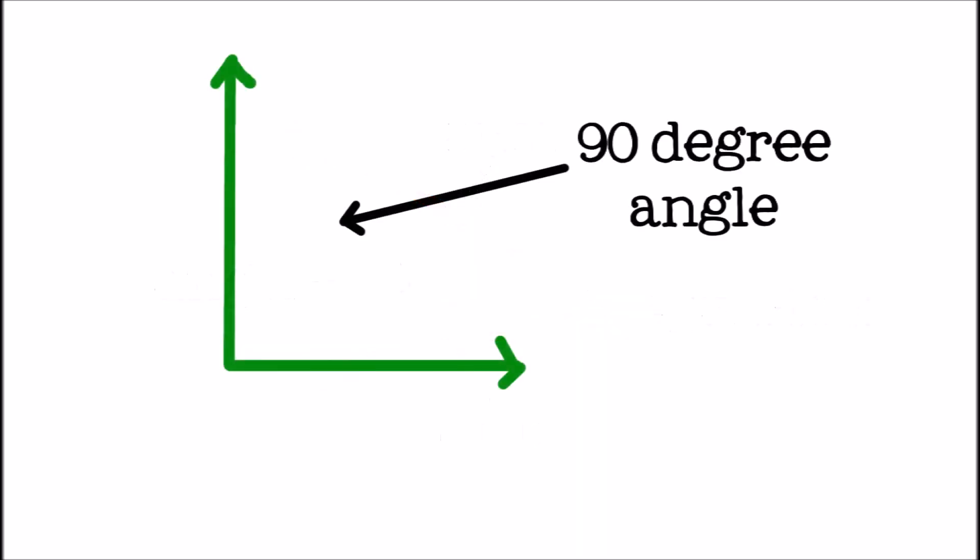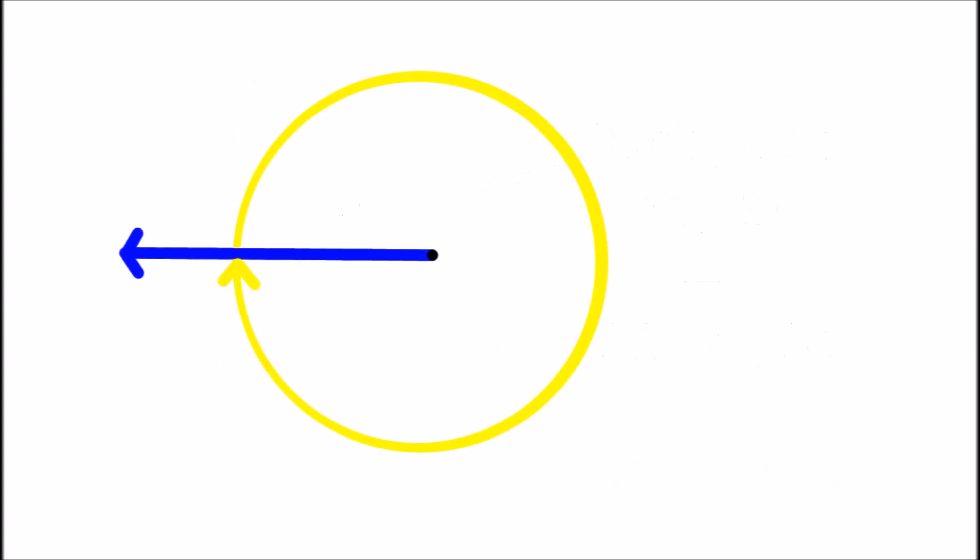Angles are measured in degrees, which is shown by this symbol. A complete turn, also known as a full rotation, all the way back to the place it started, is 360 degrees.